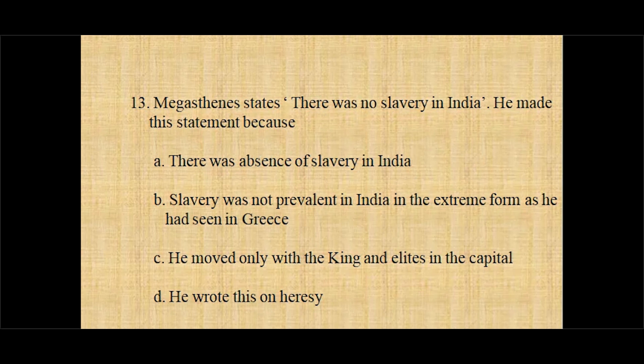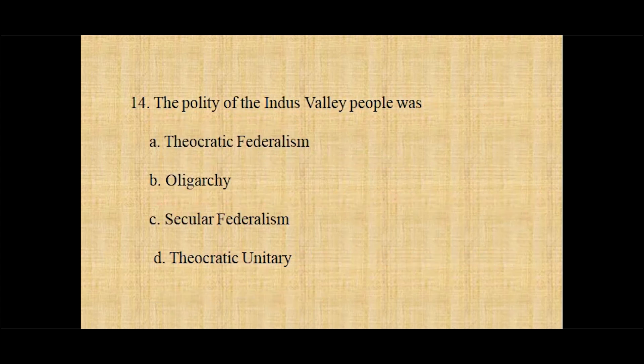Question number thirteen: Megasthenes stated there was no slavery in India. He made this statement because — option A there was an absence of slavery in India, option B slavery was not prevalent in India in the extreme form as he had seen in Greece, option C he moved only with the king and allies in the capital, option D he wrote this on hearsay. And the correct answer is option B, slavery was not prevalent in India in the extreme form as he had seen in Greece.